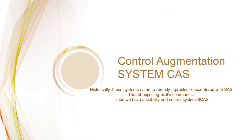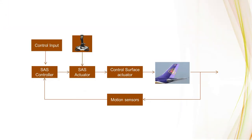As for control augmentation systems, they came as a natural evolution from stability augmentation systems to solve a particular problem: SAS controllers would issue commands that oppose the pilot's input. To prevent that, control augmentation and stability augmentation are used in conjunction. Thus, those systems are called control and stability augmentation systems, or CSAS.